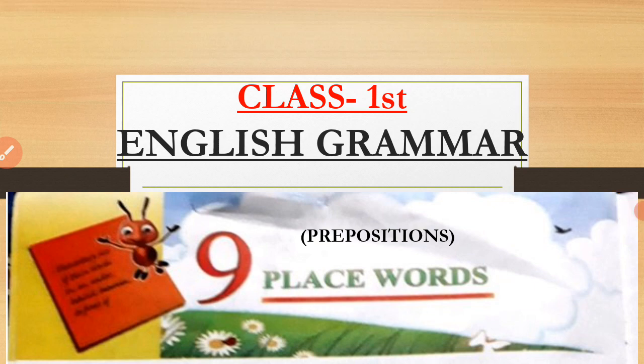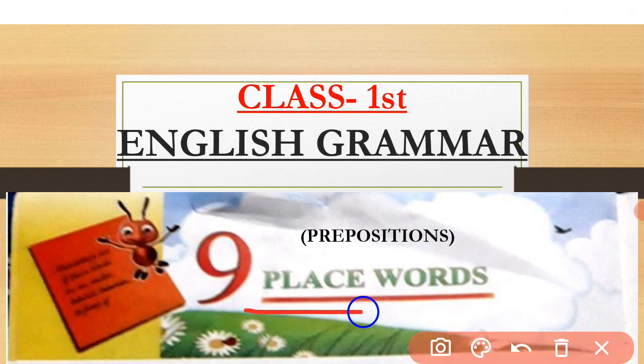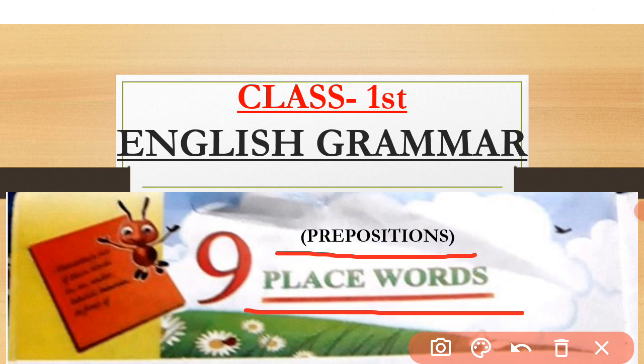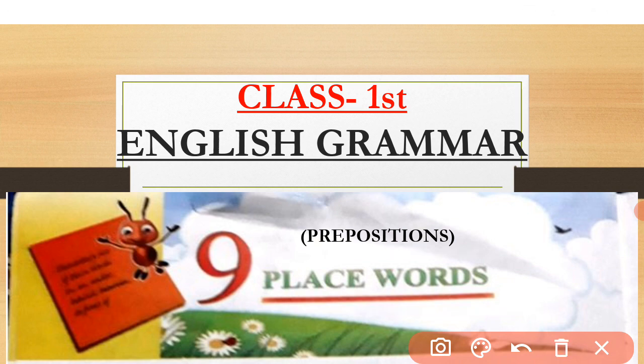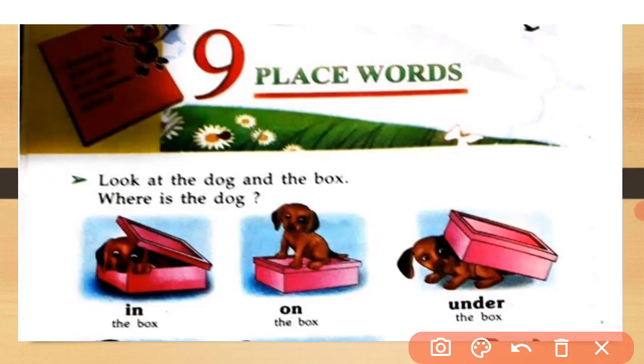Hello everyone, today we are going to start another topic of Class 1 English Grammar — that is place words, Chapter 9. Place words are also called prepositions. In English grammar, prepositions are used before the noun to indicate the position of the noun.